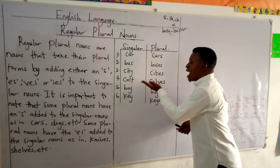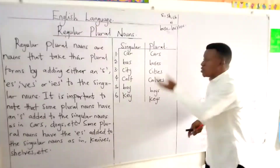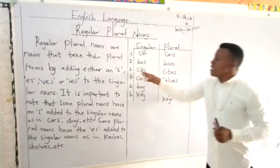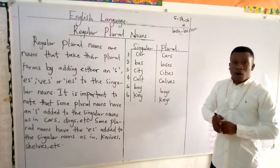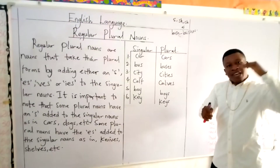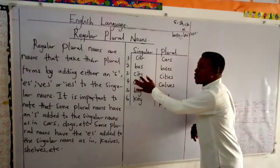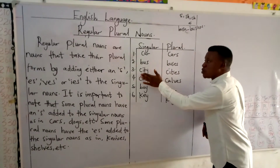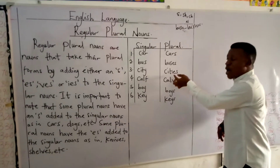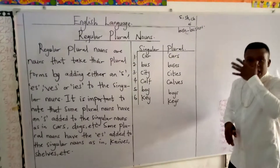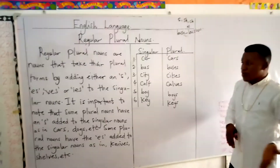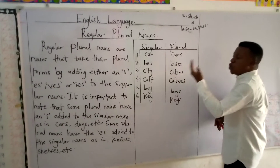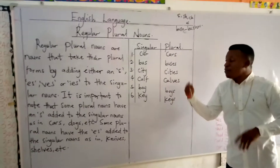For city, we have cities. Why do we have cities? Because the Y changes to I and we add ES to the word. Whenever a word ends with a Y, and the letter before the Y is a consonant — as in city, where T is a consonant — you change your Y to I and add ES. Then we have cities, meaning more than one city. Now for calf, you change the F to V and add ES to form the plural word, giving you calves.